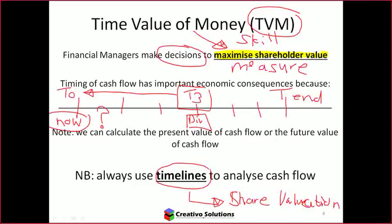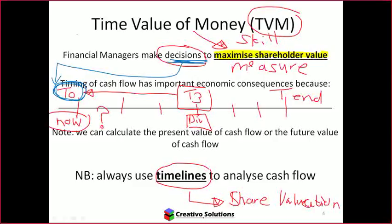The important point about timing: everything must be at one point in time. You'll have lots of things at different points in time, but when making a decision, we always need to look at one point in time. Decisions are made today, so we normally take everything back to time zero to determine whether to accept or reject the project.